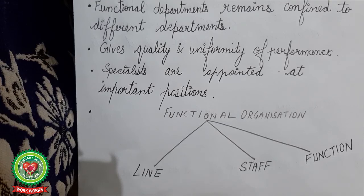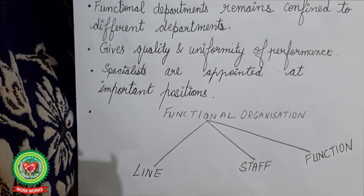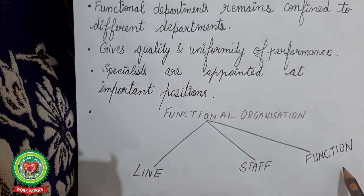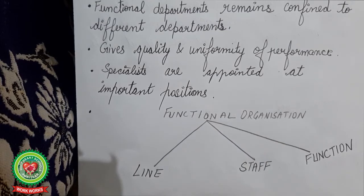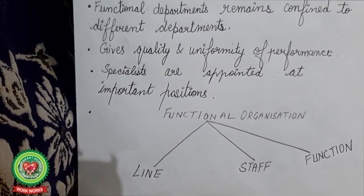Staff specialists are appointed at important positions to guide and protect the organization from competitors. Generally, a functional organization is comprised of line, staff, and function — this doesn't mean that line structure is absent; rather, line and functional structures go simultaneously. In every functional organization, complexity is resolved and there is less burden on line organization. Functional organization tries to recover all the demerits of line organization with its efficiency.